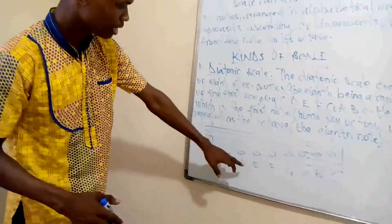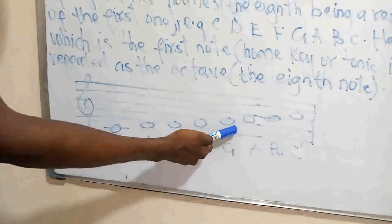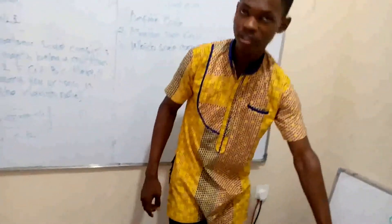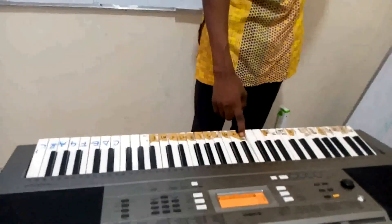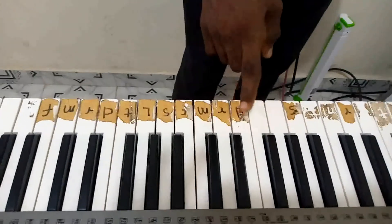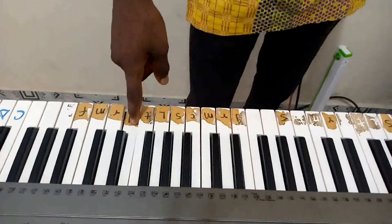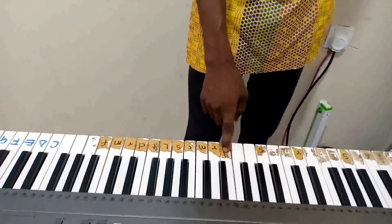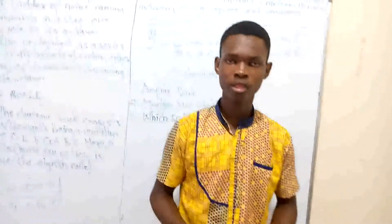This is the scale on the staff: C, D, E, F, G, A, B, C again. Now I'll illustrate this scale on the keyboard. We have C to C — this is C on the keyboard. Moving alphabetically from C back to C, you have C, D, E, F, G, A, B, C. We have succeeded in playing the scale of C major. The first and the last notes are always the same in the diatonic scale.